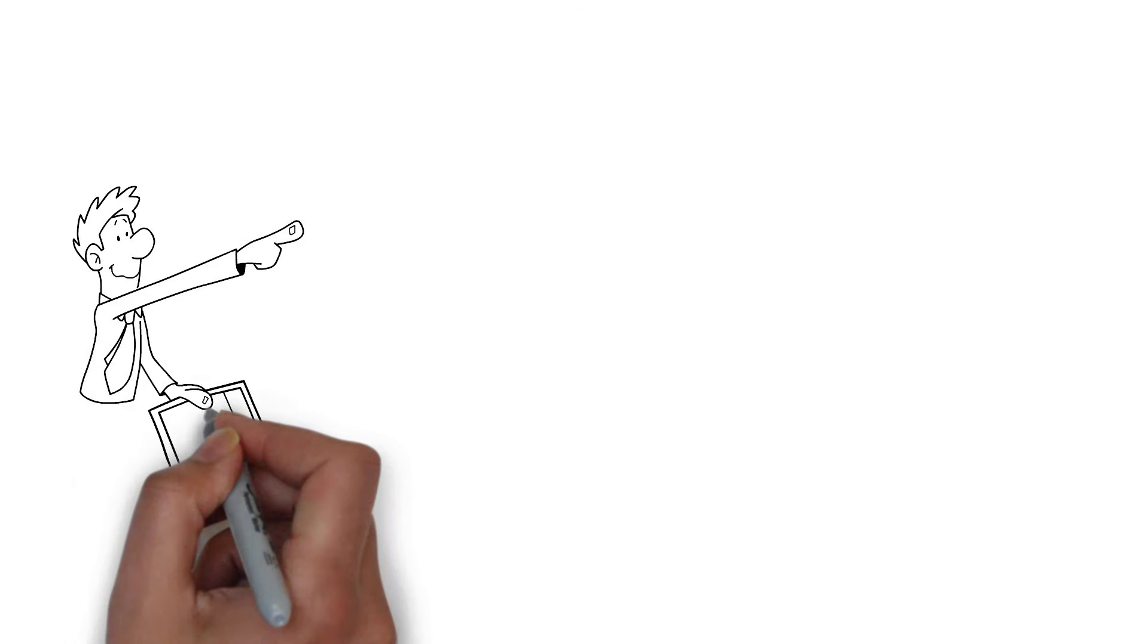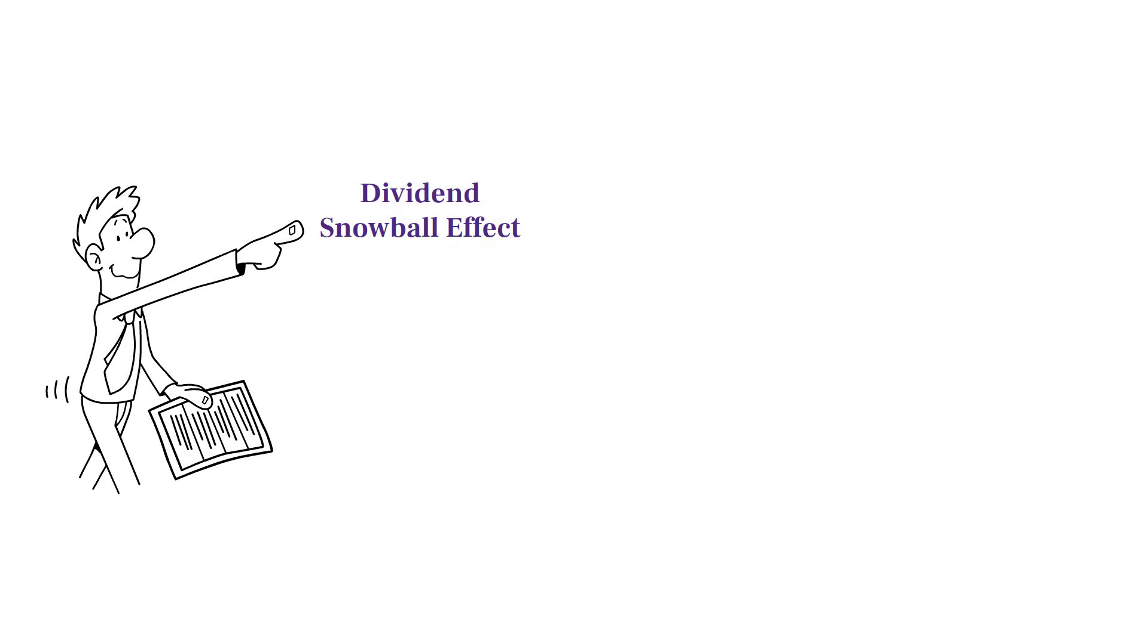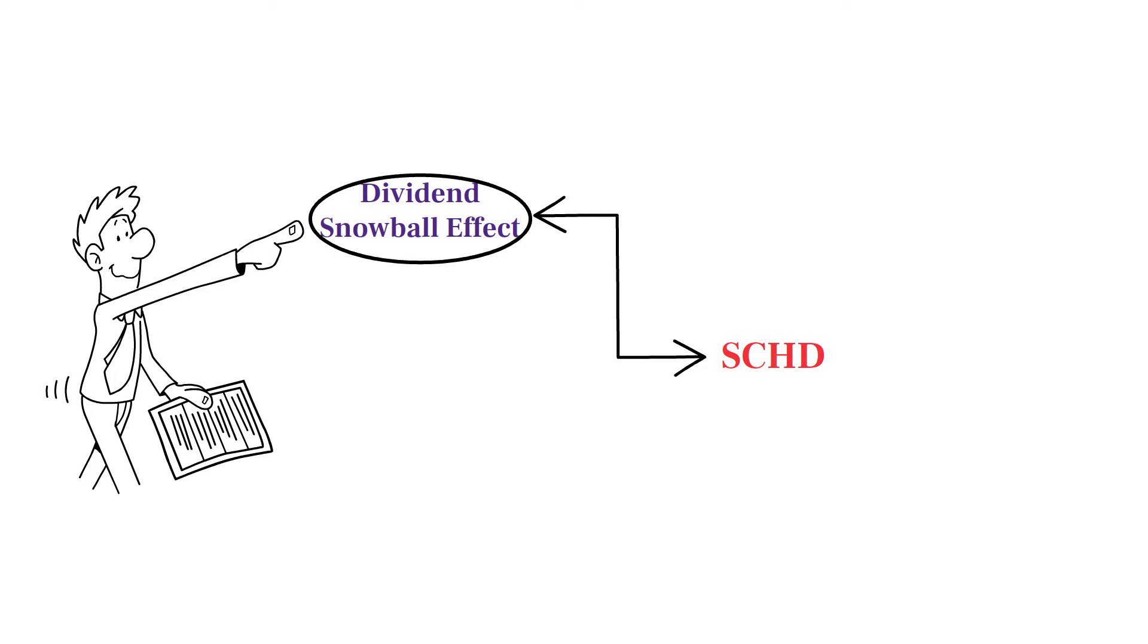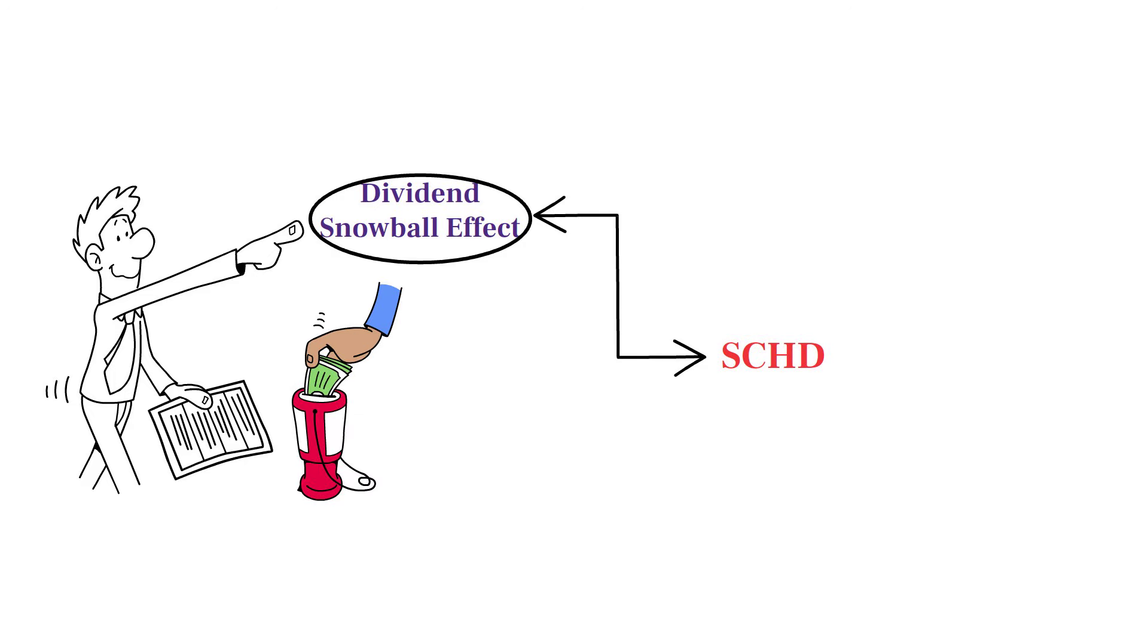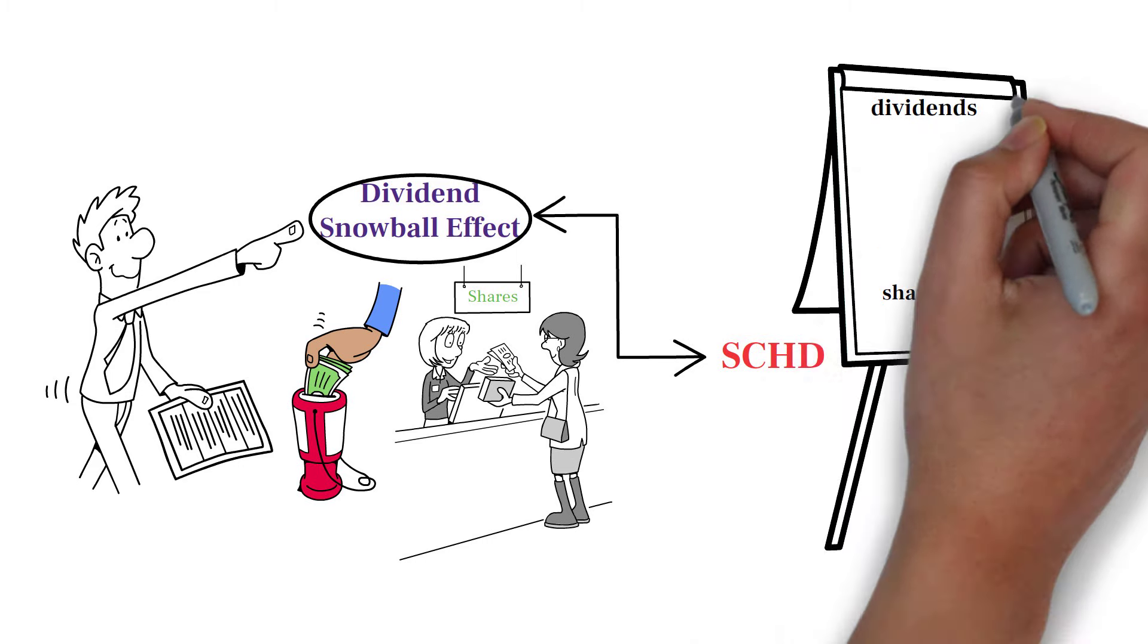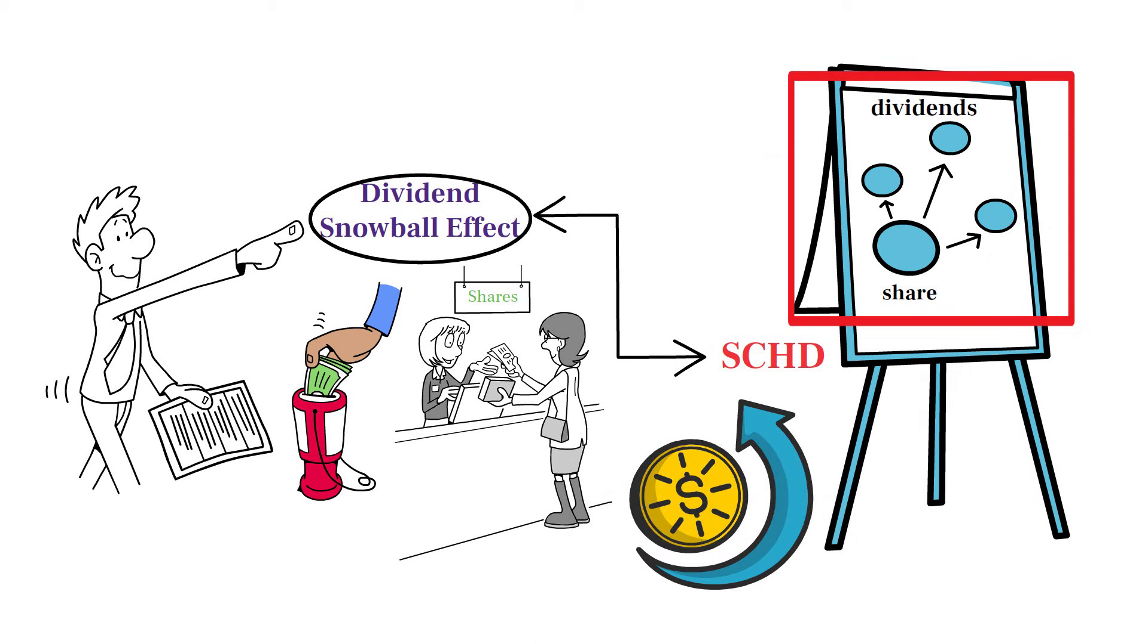One of the most powerful strategies in dividend investing is the dividend snowball effect, and SCHD is particularly well-suited for this approach. The dividend snowball effect works by reinvesting the dividends you receive to buy more shares of the ETF. Each additional share you acquire generates its own dividends, which can then be reinvested to purchase even more shares. This creates a cycle of growing income over time.